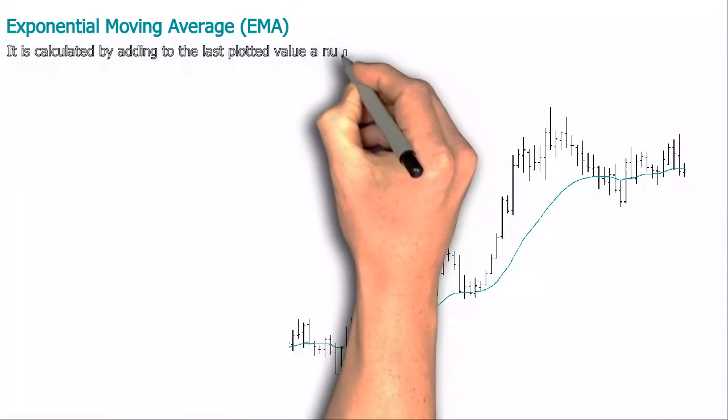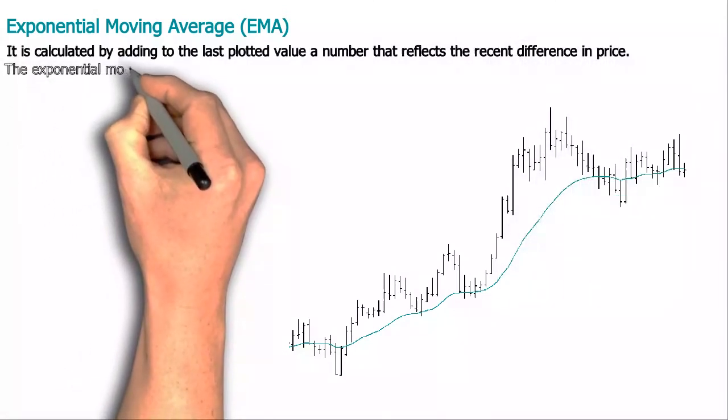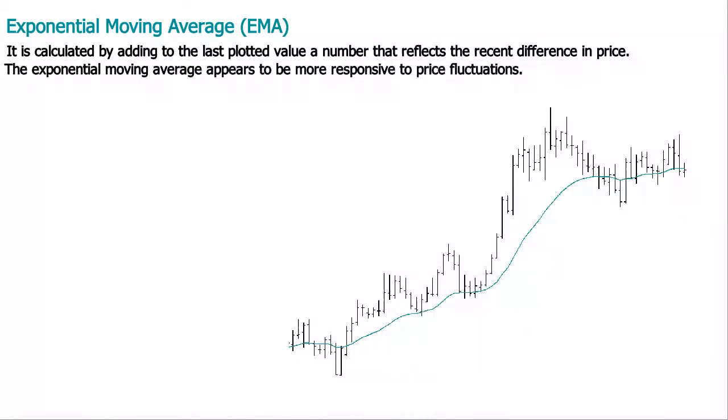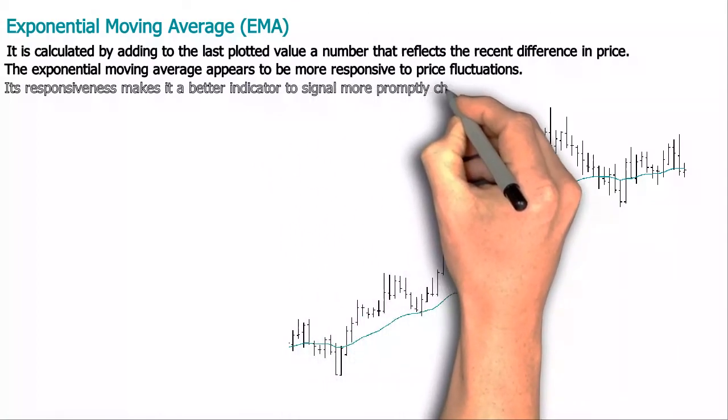Unlike the Simple Moving Average, the Exponential Moving Average doesn't eliminate any previous price levels from the set when it is calculated, and it appears to be more responsive, reflecting more closely minor fluctuations in price behavior.